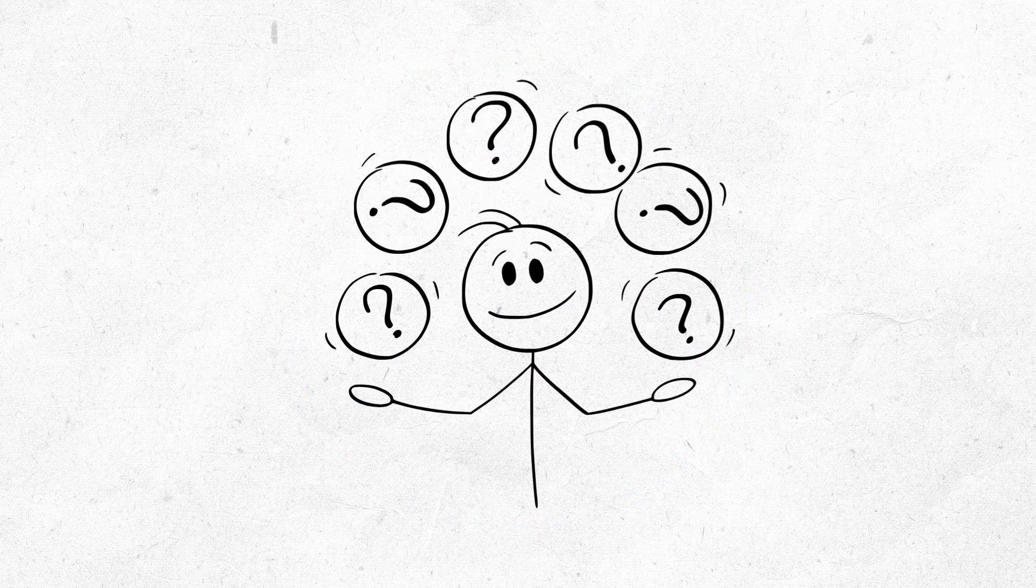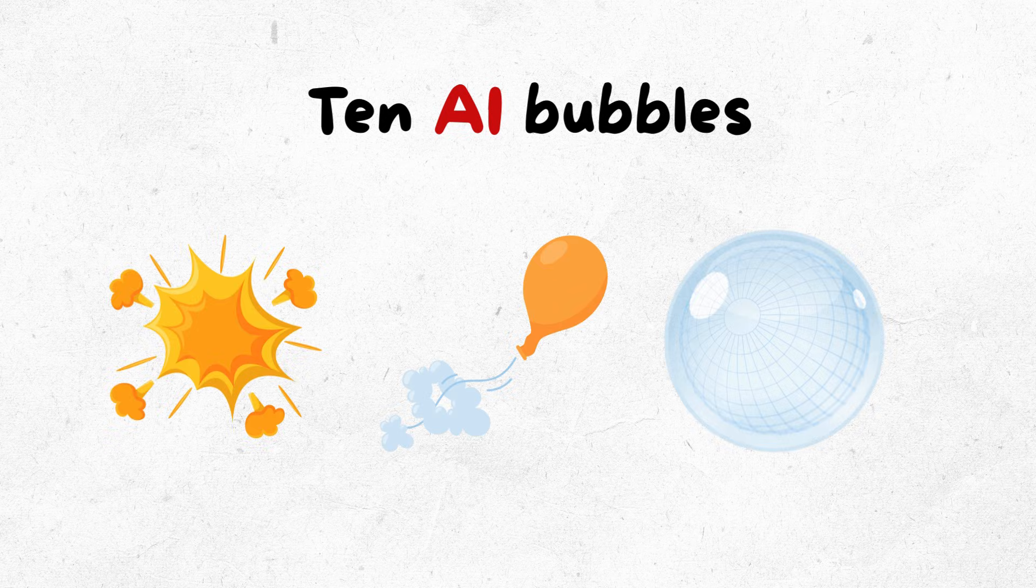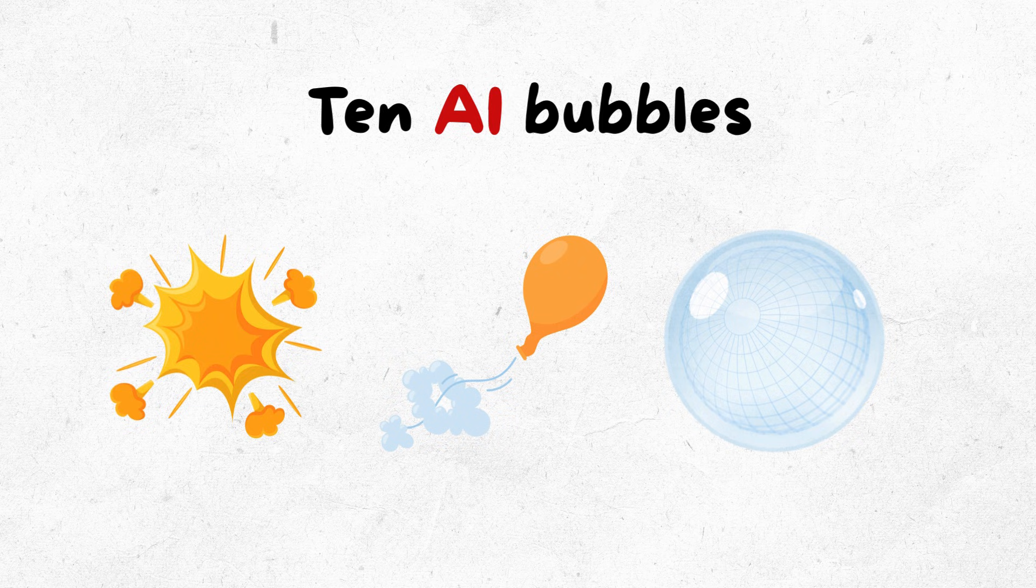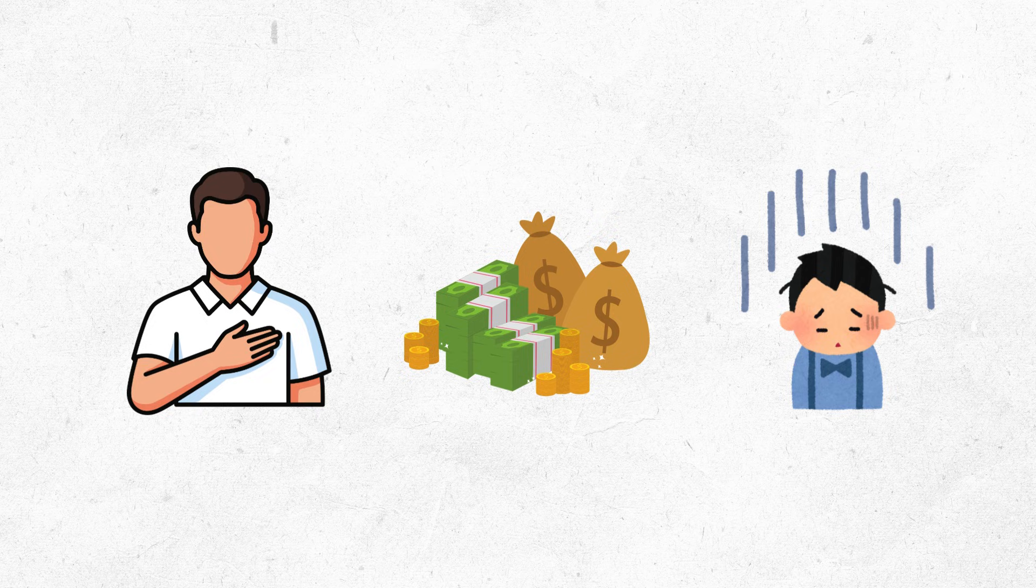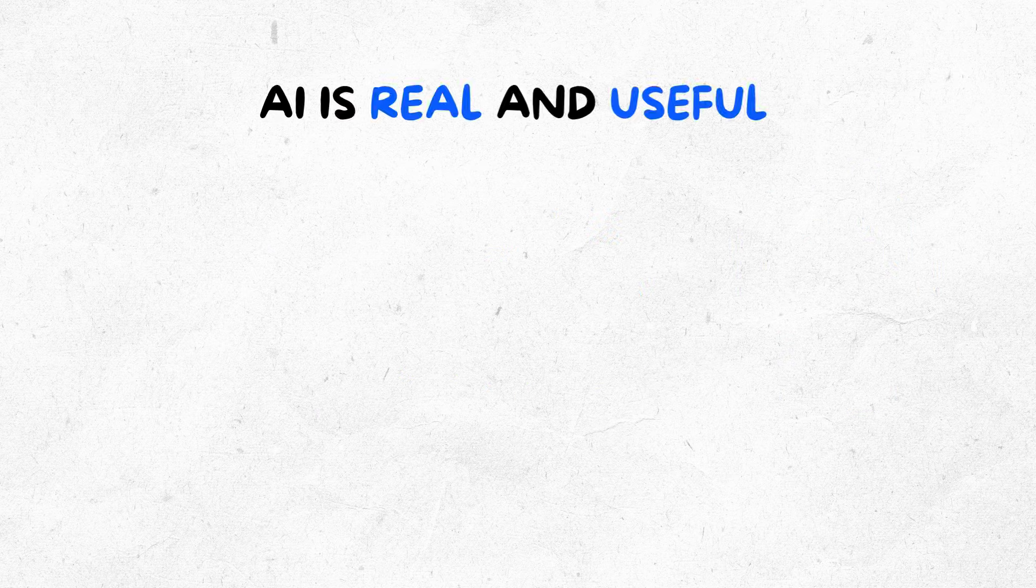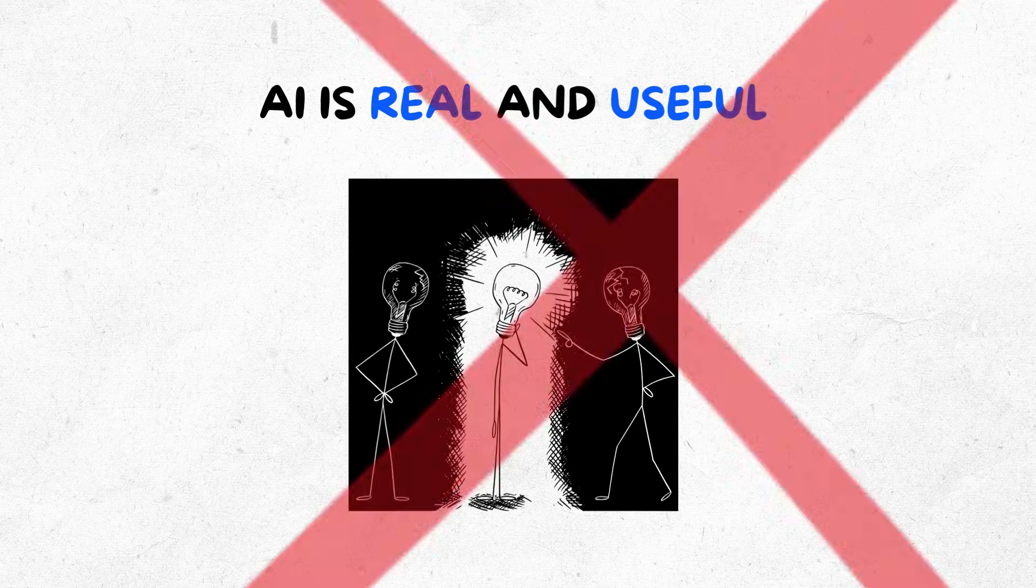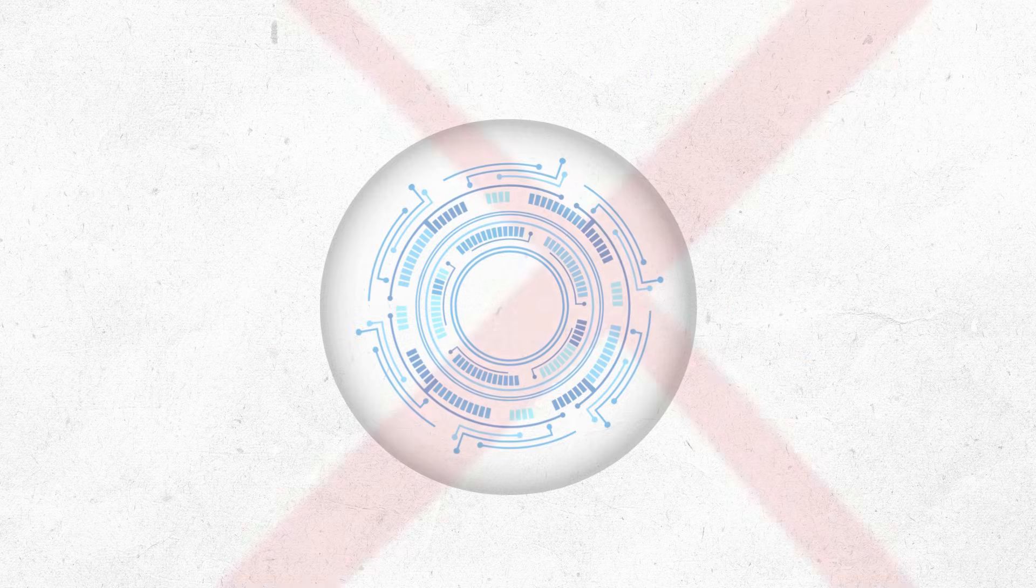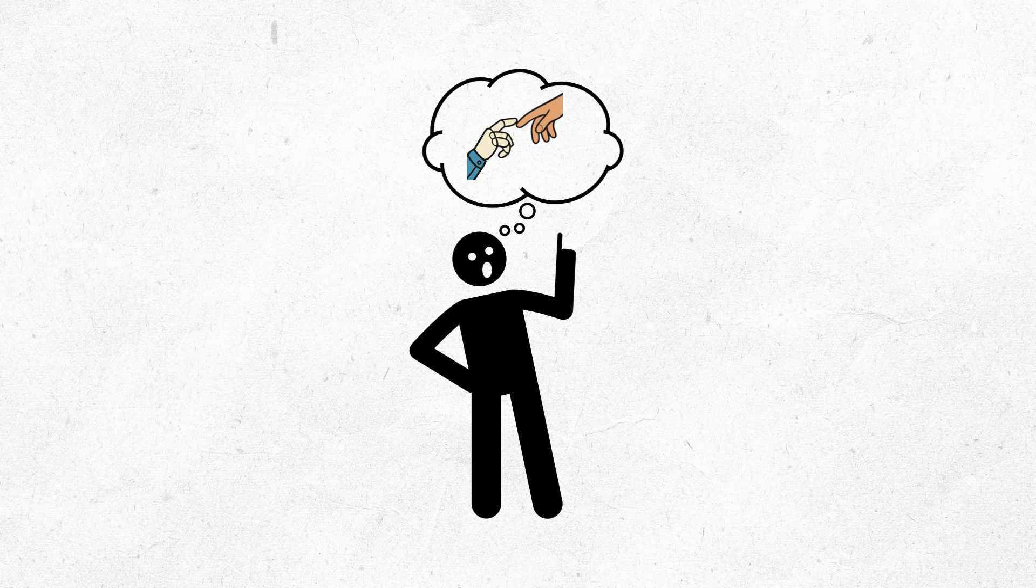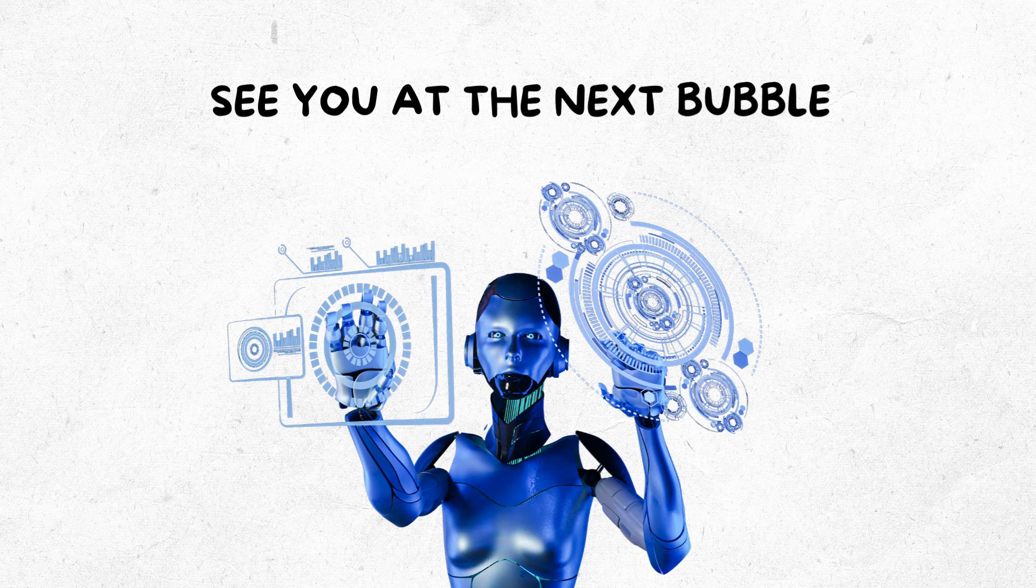What we learned. 10 AI bubbles. Some exploded. Some are deflating. Some we're living in. The pattern never changes. Big promises. Tons of money. Disappointing results. Everyone moves on. AI is real and useful. But every few years, we convince ourselves it'll change everything overnight. It never does. Real progress is slow and boring. The actual bubble isn't the technology. It's us believing this time will be different. It won't be. But we'll keep falling for it anyways. See you at the next bubble. It's probably already forming.